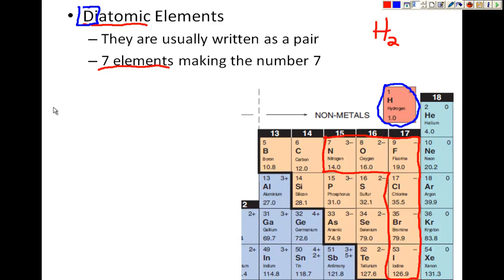Another way that students like to remember is using the term HONFBrICl. So they just remember, oh, HONFBrICl is the magic seven. Or in other words, hydrogen, oxygen, nitrogen, fluorine, bromine, iodine, and chlorine. So one, two, three, four, five, six, seven. These are the seven elements that, when they're in reaction, they're going to be forming H2, or O2, or N2, or F2, Br2, I2, or Cl2. So if you ever see a reaction that says chlorine gas is reacting with something, then you know that it's going to be written as Cl2.